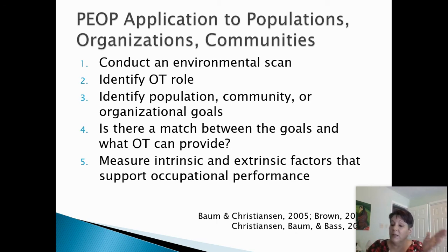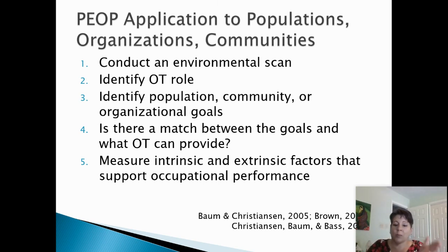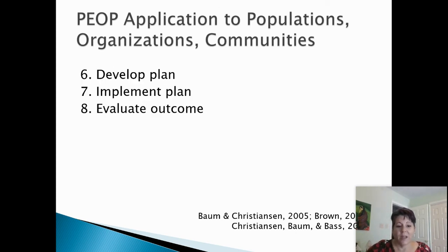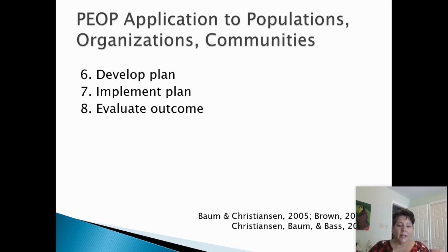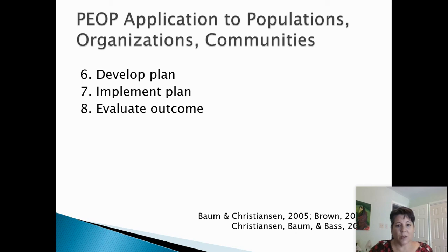Then we're going to look at both the intrinsic — the client — and the extrinsic — the environmental factors that support and that might be inhibiting or causing barriers to occupational performance. Then we develop a plan: how can we take the goals, the supports and barriers we've seen, and implement a plan to help improve the occupational functioning of this organization according to what the client says they need? Then you always cycle back, evaluate how it went, and repeat the cycle again if needed in order to continue intervening to get to where you need to be with this particular organization.